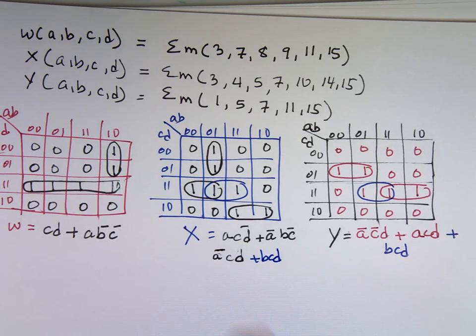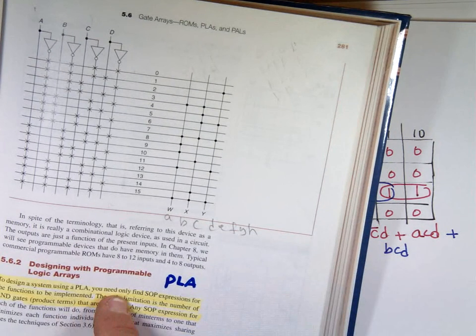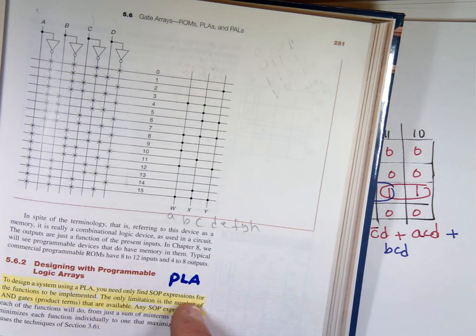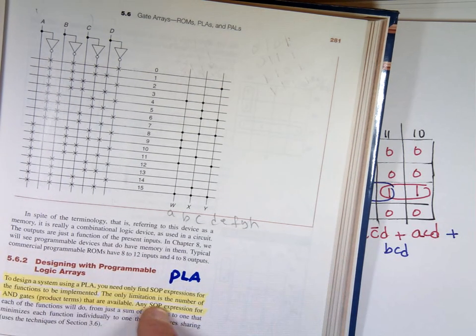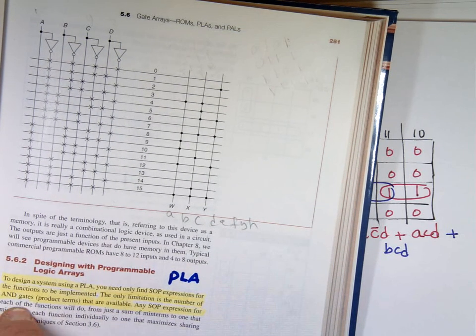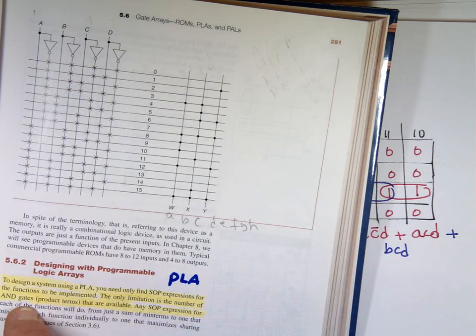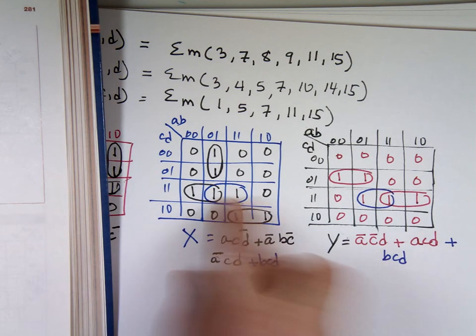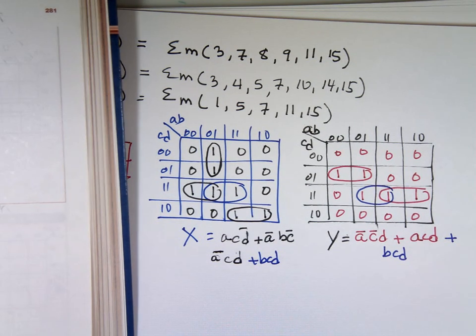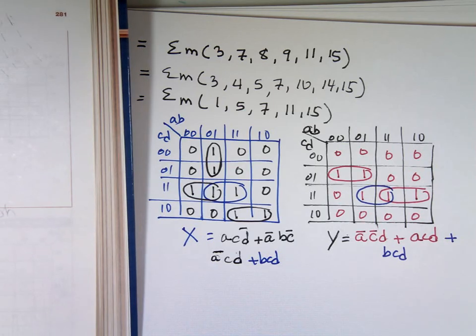Your limit says — if you go back to the definition — to design a PLA system, you need only find the sum of product expression for each function, and the only limitation is the number of AND gates. So if I can minimize by combining, by taking one term and sharing it, I don't have to use two gates — I'm only using one for both. That's a better design.